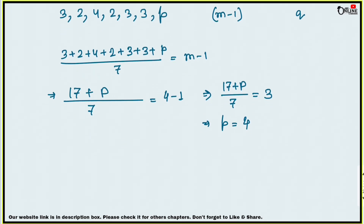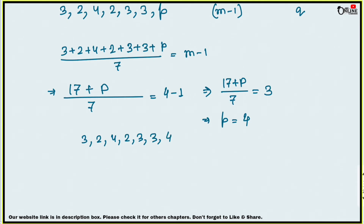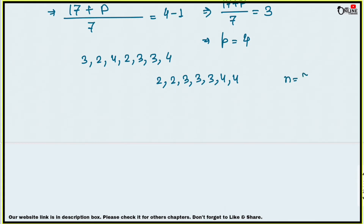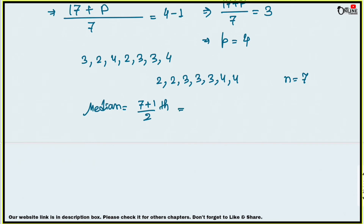With p = 4, write down the data: 3, 2, 4, 2, 3, 3, 4. Rearrange in ascending order: 2, 2, 3, 3, 3, 3, 4, 4. Wait — there are 7 numbers, so n = 7, which is odd. Median = (7+1)/2 = 4th term. The 4th term is 3. So median = 3, meaning q = 3.